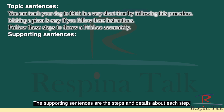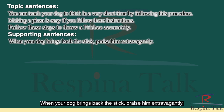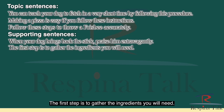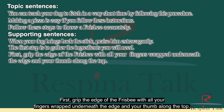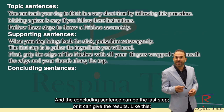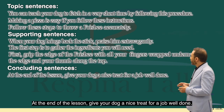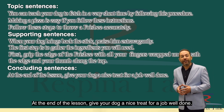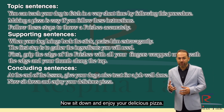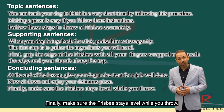The supporting sentences are the steps and details about each step. For example: "When your dog brings back the stick, praise him extravagantly." "The first step is to gather the ingredients you will need." "First, grip the edge of the frisbee with all your fingers wrapped underneath the edge and your thumb along the top." The concluding sentence can be the last step or it can give the results, like: "At the end of the lesson, give your dog a nice treat for a job well done." "Now sit down and enjoy your delicious pizza." "Finally, make sure the frisbee stays level while you throw."